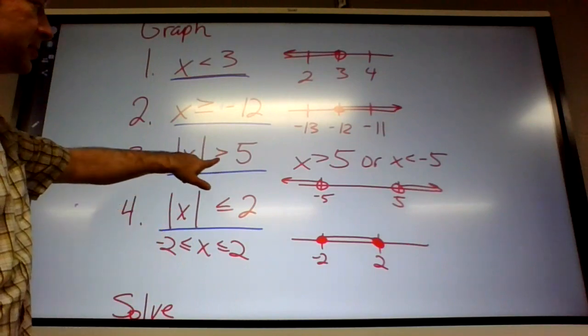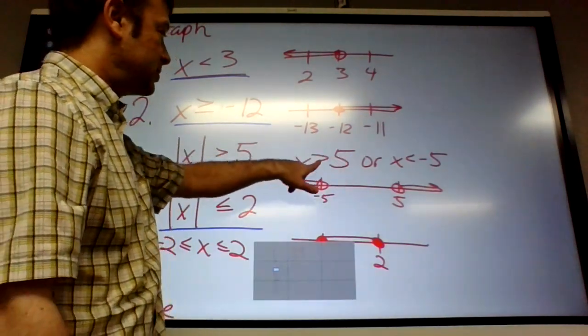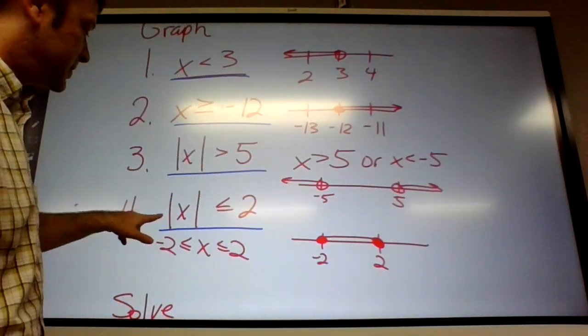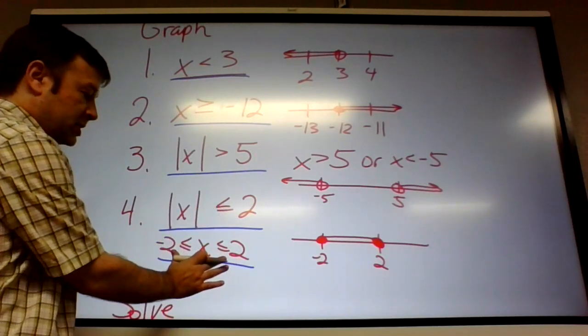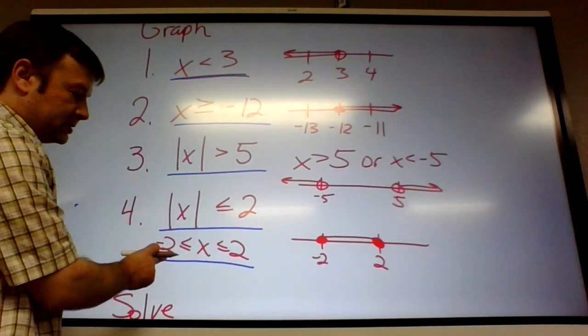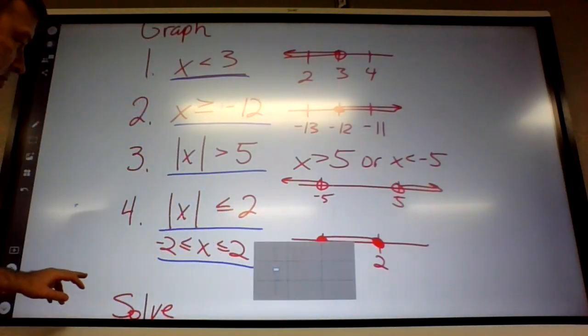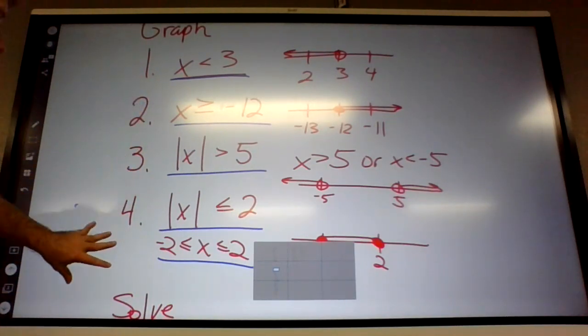So on greater than, just remember that it sets up as an or statement. It's greater than 5 or less than negative 5. The graph looks like that. On less than, this is the question, this is what we did. It sets up as between that number and its opposite, and the graph is just between those two. So probably most people get 1 and 2 right. Probably a number of people get 3 and 4 wrong.